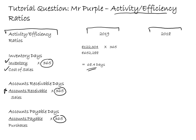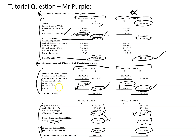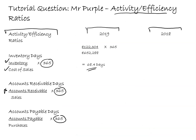For accounts receivable days - receivables are a current asset. Under current assets in the statement of financial position the receivables figure is 89,620, divided by sales from the top of the income statement 815,360, multiplied by 365. That gives 40.2 days, meaning that on average the people we sell goods to on credit are paying us in about 40 days.